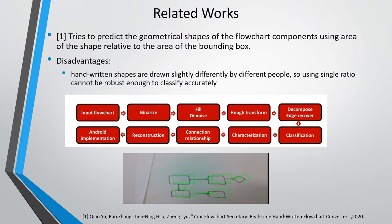The main disadvantage of the prescribed shape classifier is that handwritten shapes are drawn slightly differently by different people, so there is an element of variability in the way that people draw shapes. Therefore, a single ratio would not be sufficient to have a robust classifier. Therefore, this project will aim at improving the classification and pre-processing steps suggested in this paper.